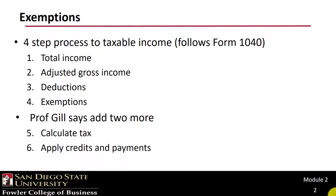We continue our march through the Individual Income Tax Calculation. We are now to Step 4, Exemptions. However, as I have mentioned a couple of times, the deduction for personal exemptions is gone. This should be quick. Let's remind ourselves again of the Overview Computation.